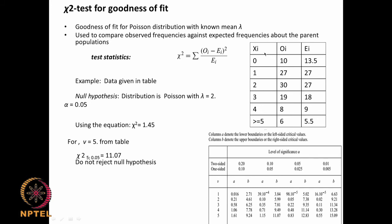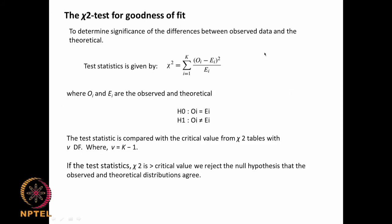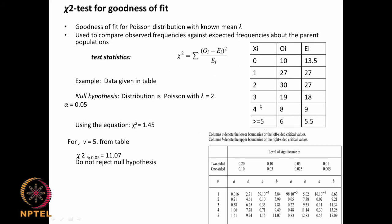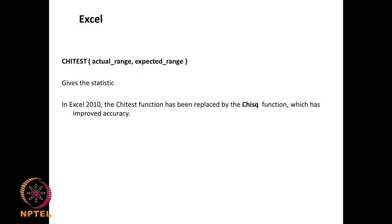So the null hypothesis is that observed equals expected, and the alternate is that they are not equal. The chi-square test statistic must exceed the critical value to reject. Excel also has a function — CHITEST — which takes the actual range and expected range and gives you the probability directly.